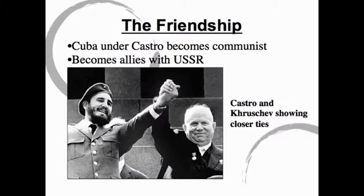Cuba had had a dictator named Fulgencio Batista since the 1940s. He was pretty unpopular with the masses of Cuban people. And in 1959, a young man named Fidel Castro led the Cuban Rebellion to overthrow Batista. Castro promised people freedom, food, etc., and was able to take over.